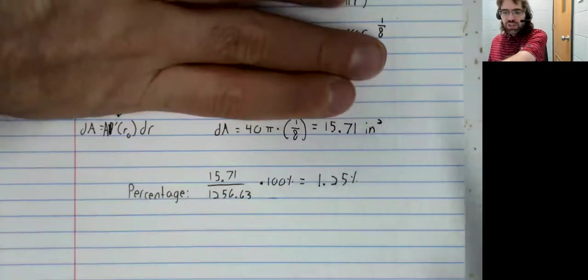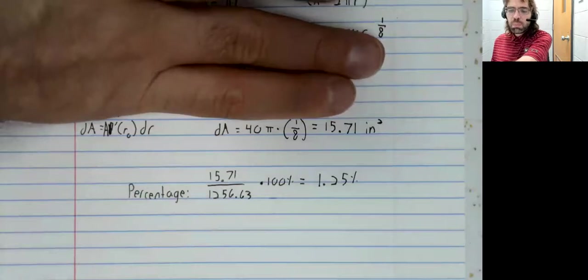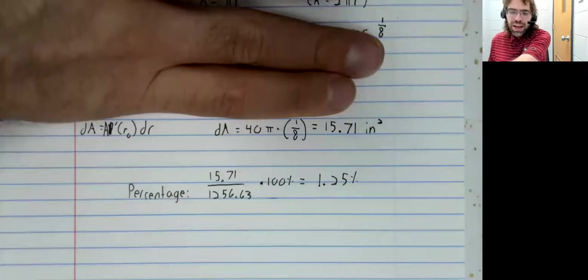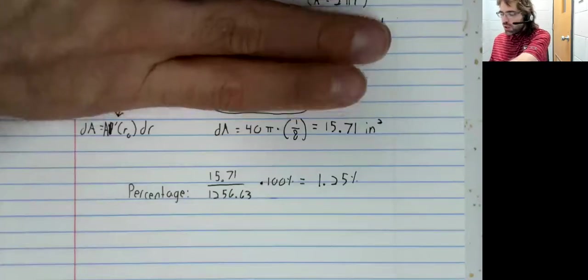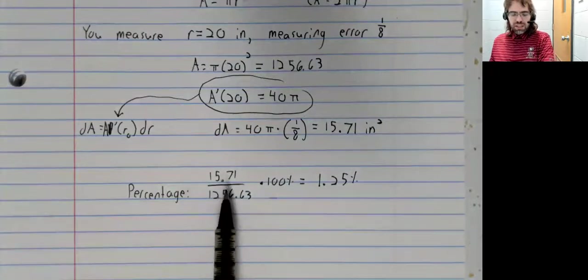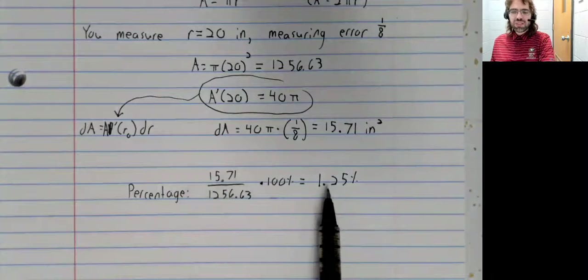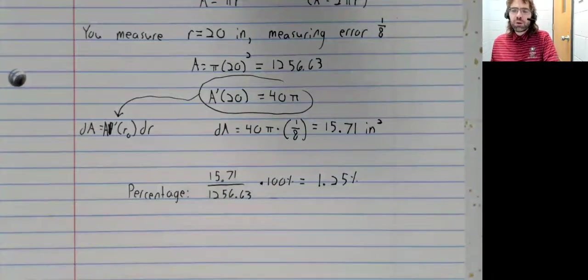And the point of using a percentage is to keep these numbers in perspective. Frankly, is 15.71 inches squared a big number or not? That doesn't have an objective yes or no answer. There are situations it would seem big, there are situations it would seem small. Once you look at it explicitly in terms of a percentage though, you can say, well, it's 1.25%.